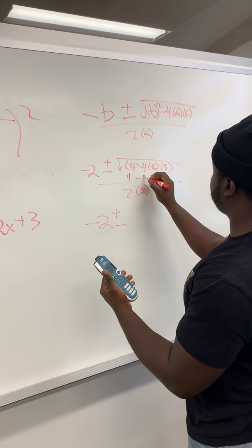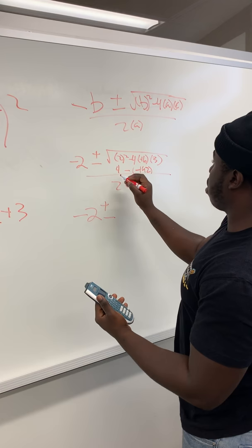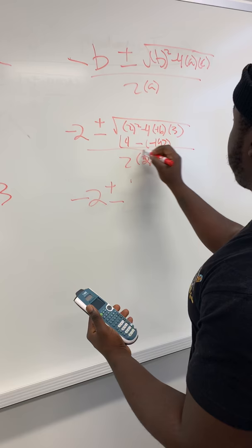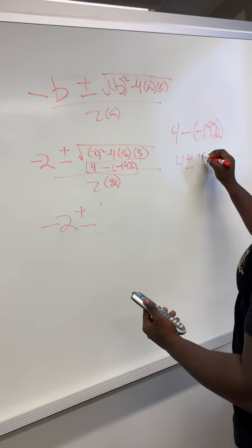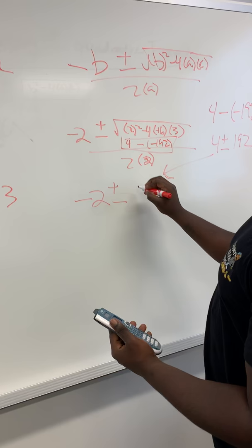This will be negative 192. So then, quick sidebar, 4 minus negative 192 will turn into 4 plus 192.